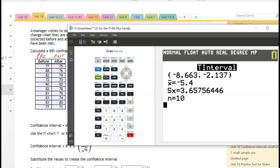And let's write those numbers down, negative 8.663, negative 2.137. Let's write down the average, negative 5.4. Standard deviation, 3.6576. And n is the sample size, 10.